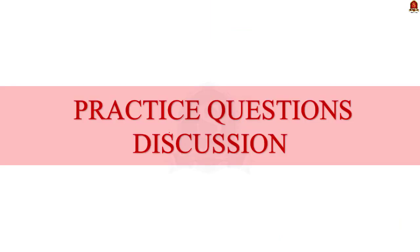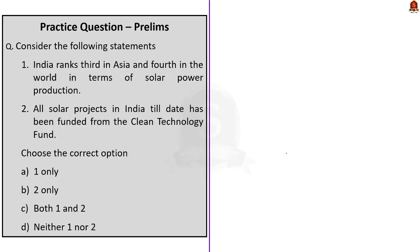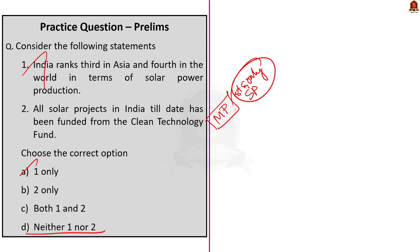In the preliminary practice question section, the first question asks about solar power production rankings. India ranks third in Asia and fourth in the world in terms of solar power production (Statement 1, correct). Not all solar power in India has been funded from the Clean Technology Fund — only the Rewa Ultra Mega Solar Plant in Madhya Pradesh has been funded from it (Statement 2, incorrect). Therefore, the correct answer is Option A: one only.